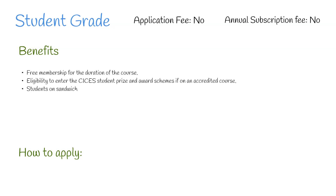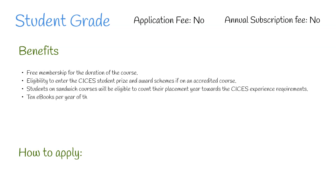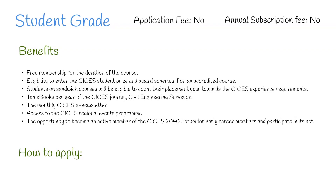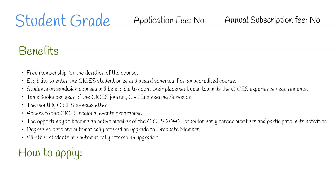Students on sandwich courses will be eligible to count their placement year towards the CICES experience requirements. Additional benefits include 10 ebooks per year of the CICES Journal Civil Engineering Surveyor, the monthly CICES e-newsletter, access to the CICES regional events program, and the opportunity to become an active member of the CICES 2040 forum for early career members. Degree holders are automatically offered an upgrade to graduate member; all other students are automatically offered an upgrade to affiliate member on successful completion of their studies.